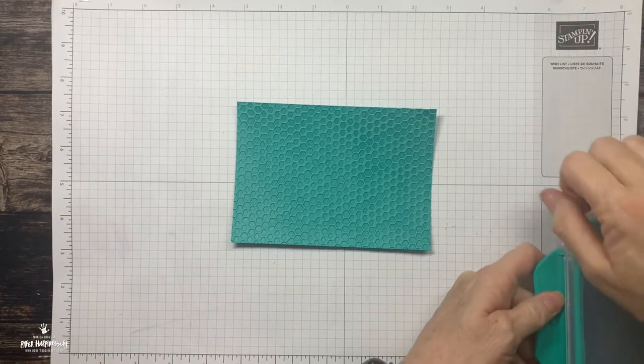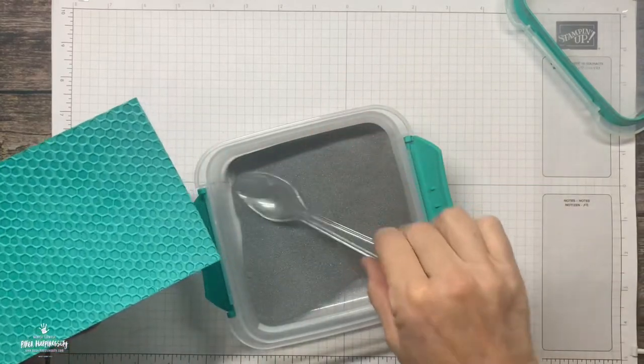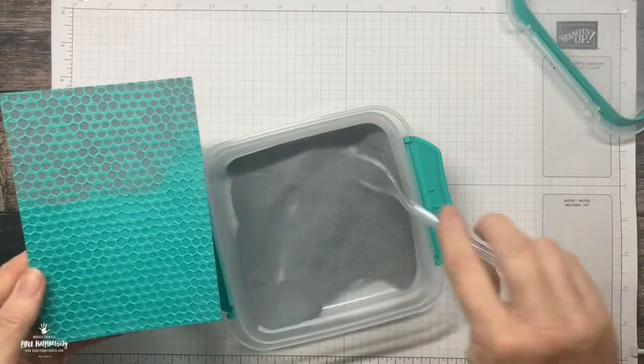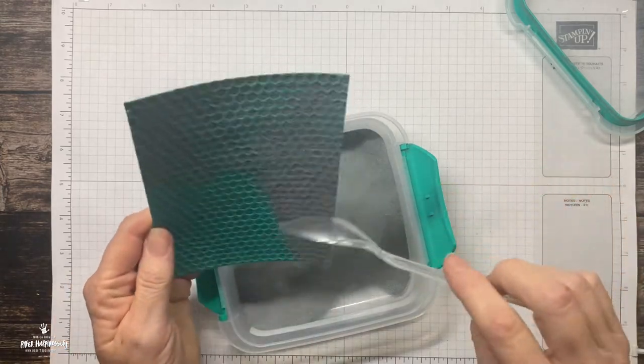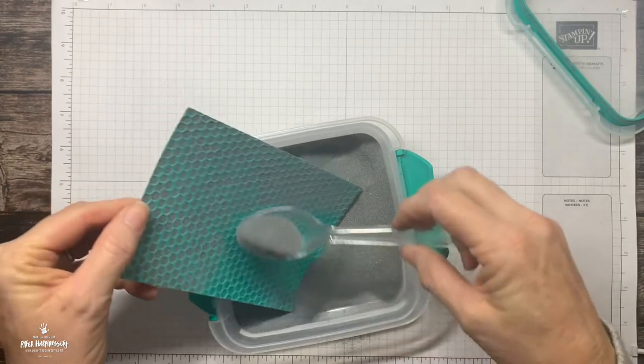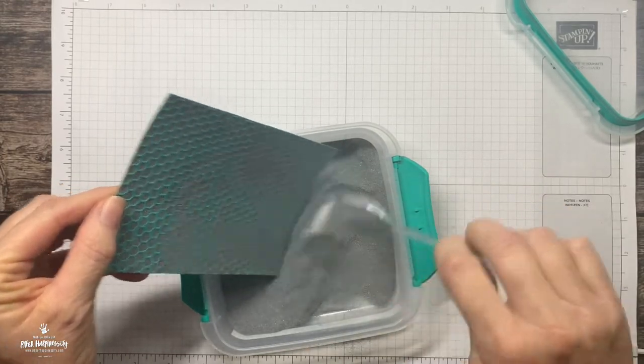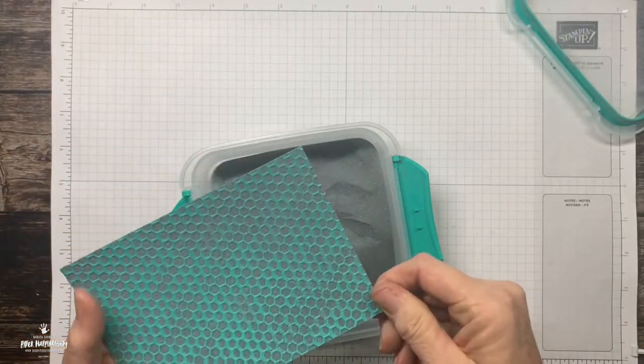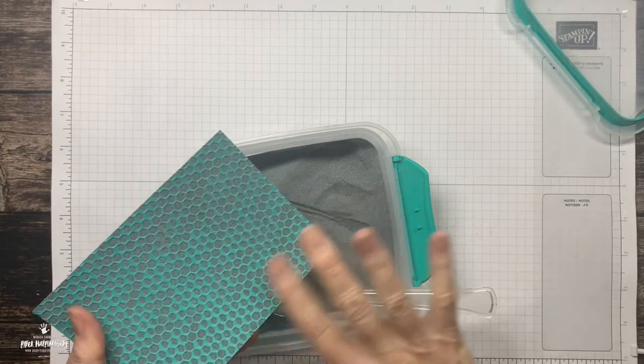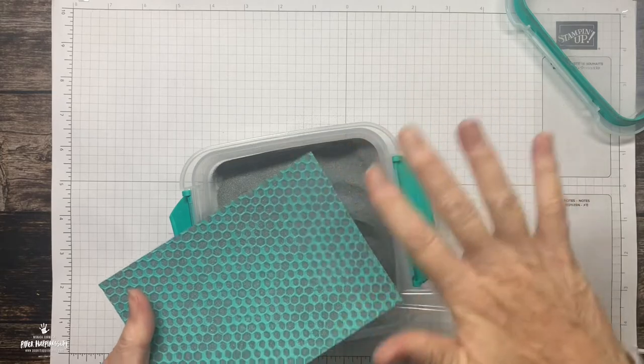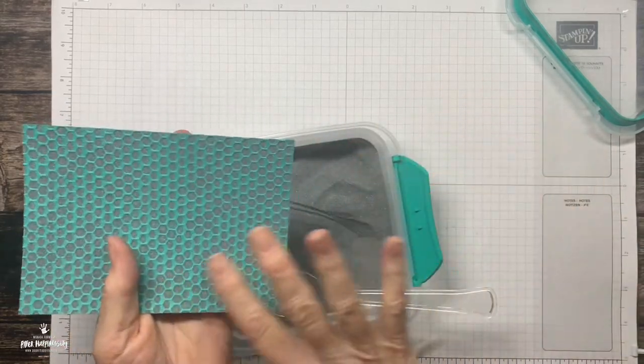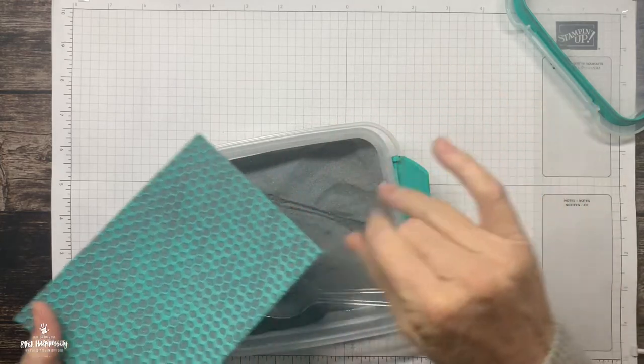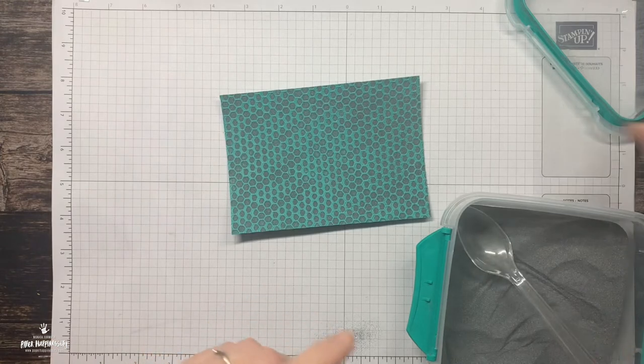We're going to grab our powder and I'm going to just sprinkle that on. Try not to get it everywhere, which I have. If you want to you can just lightly go over the top so that the powder is just only in those indents. There we go. I will close the lid on that.